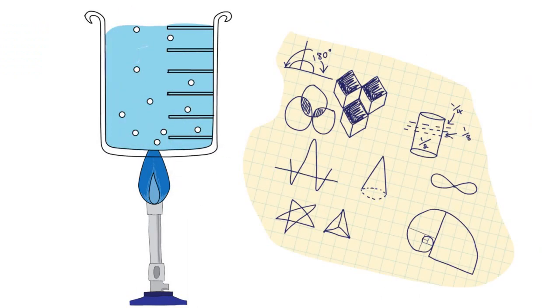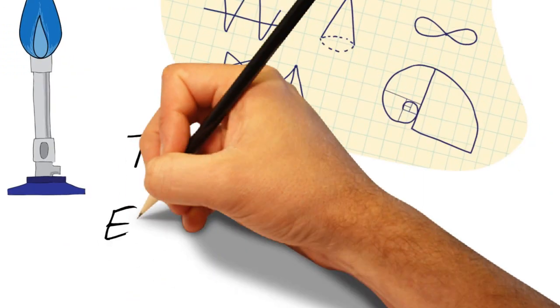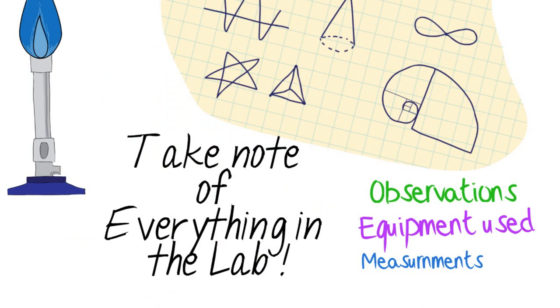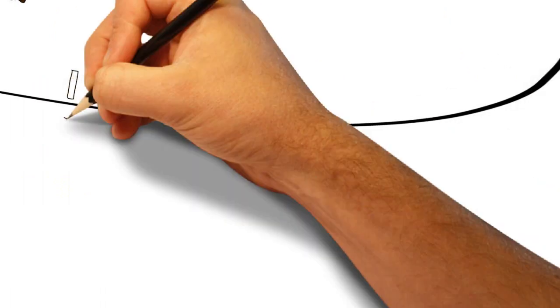First of all, keep in mind that the number one rule in writing a successful lab report is to note everything that happens in the lab session. Take note of everything: observations, equipment used, measured quantities, or whatever. Don't forget to note down your partner's name.